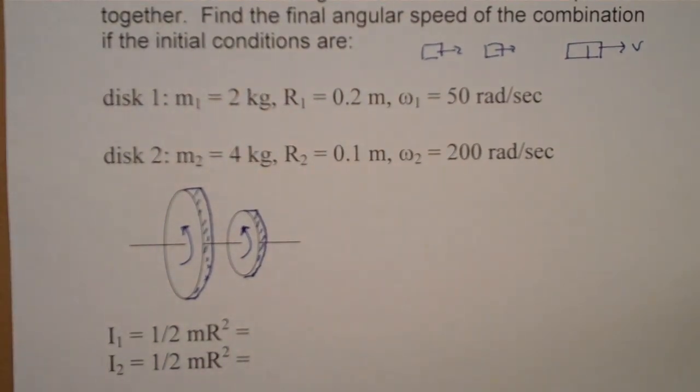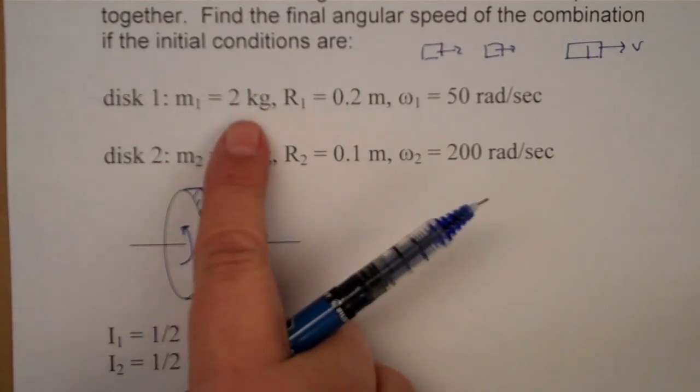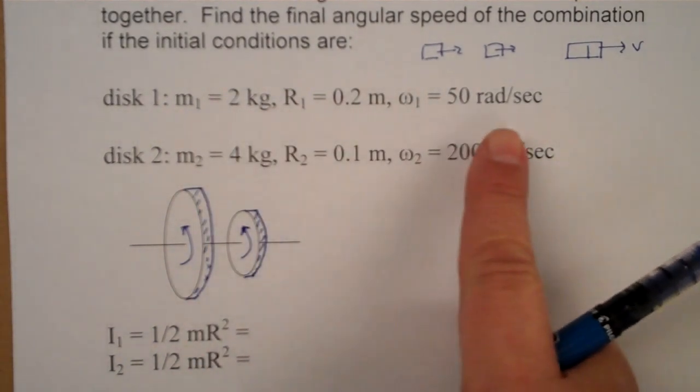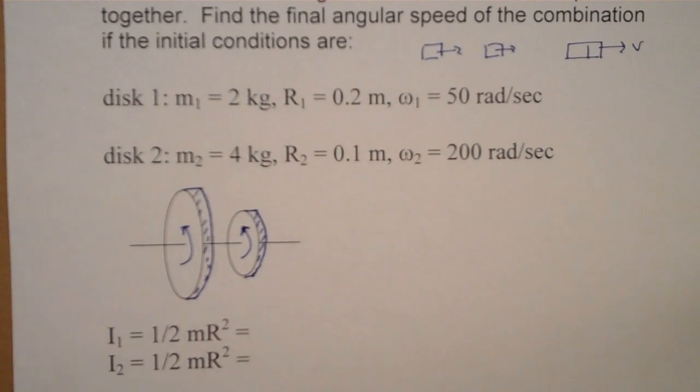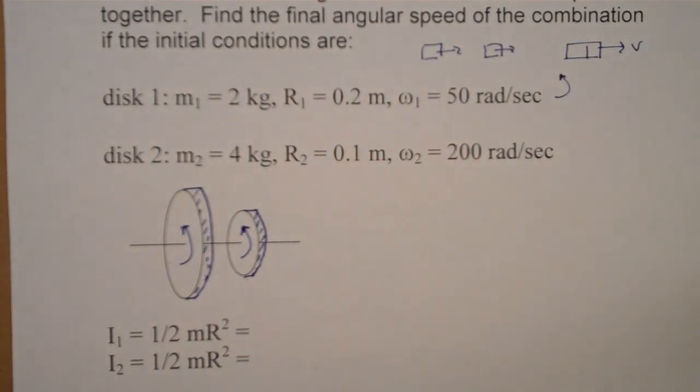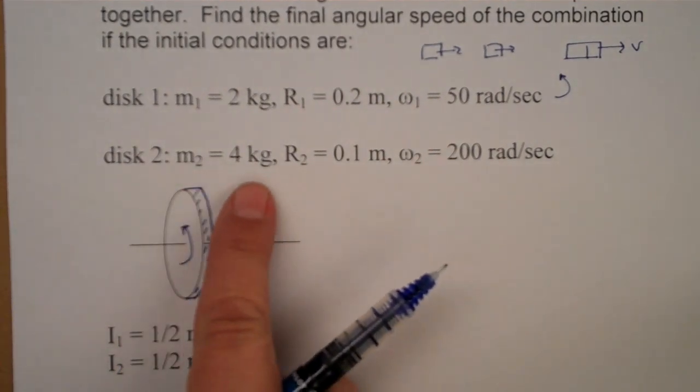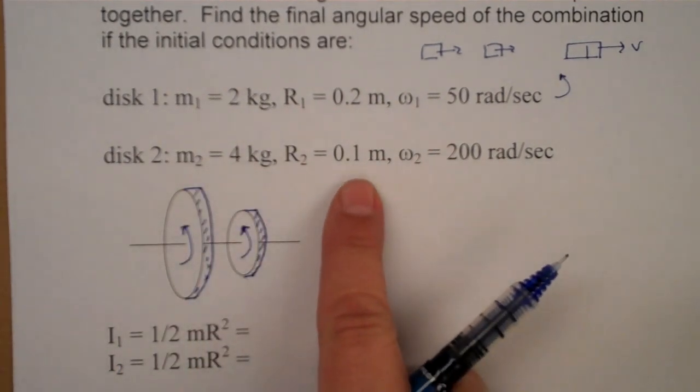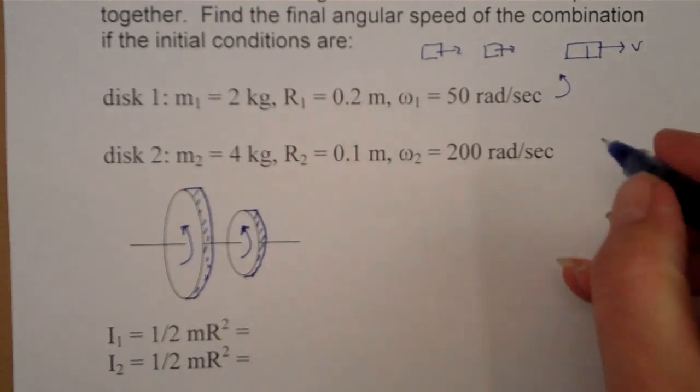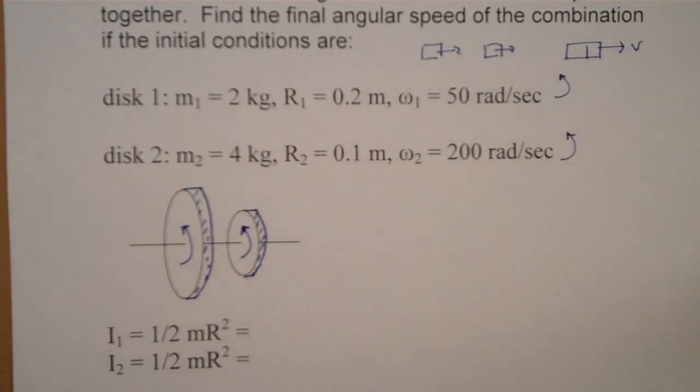So we're given the following information for both disks. The first disk is 2 kilograms with a radius of 0.2 meters. Its initial angular speed is 50 radians per second, and again we're going to have it rotate counterclockwise. Disk 2 has a mass of 4 kilograms, a radius of 0.1 meters, and its initial angular speed is 200 radians per second in the same direction.